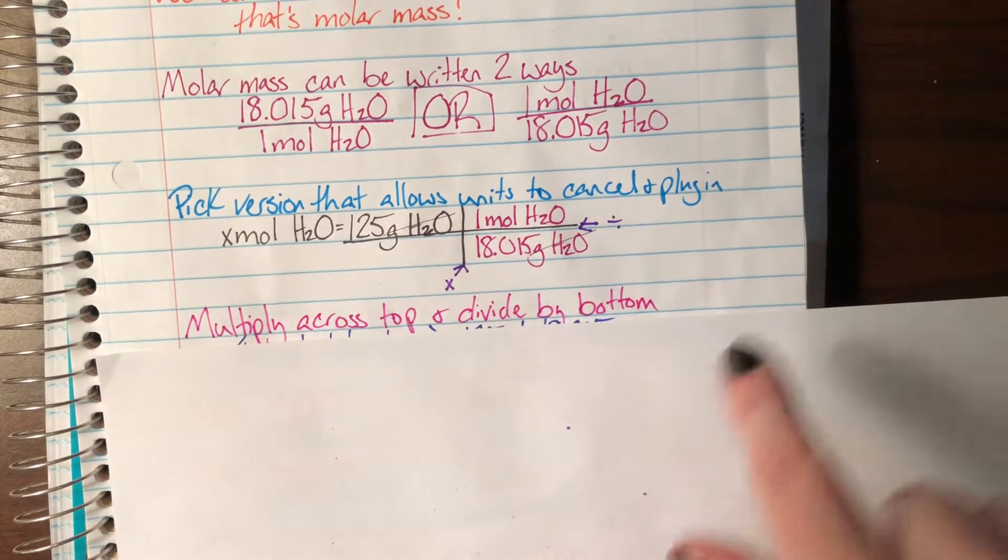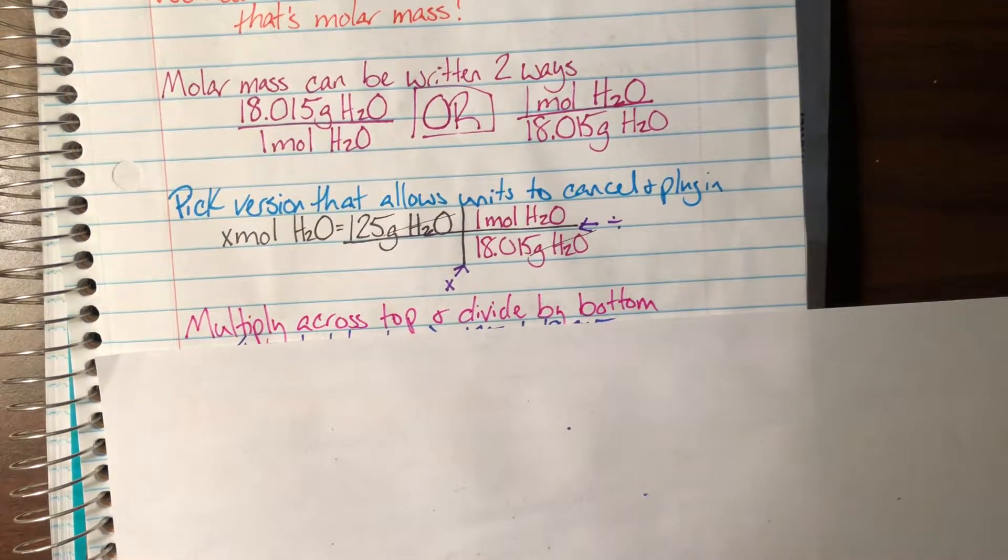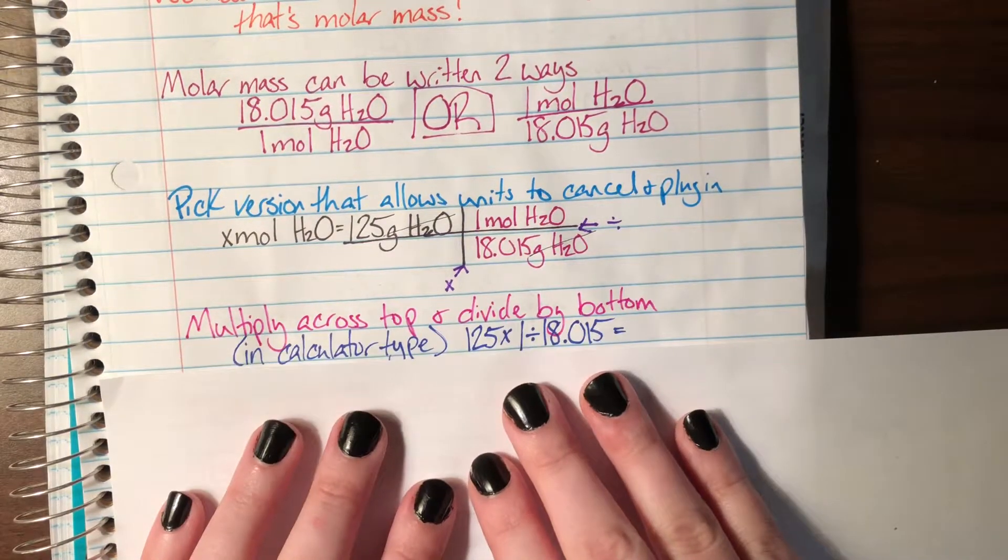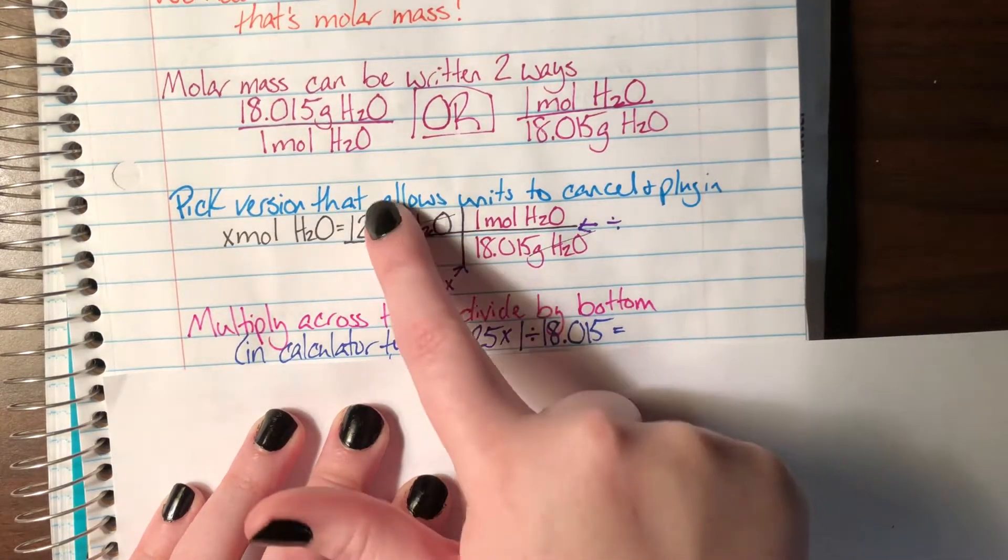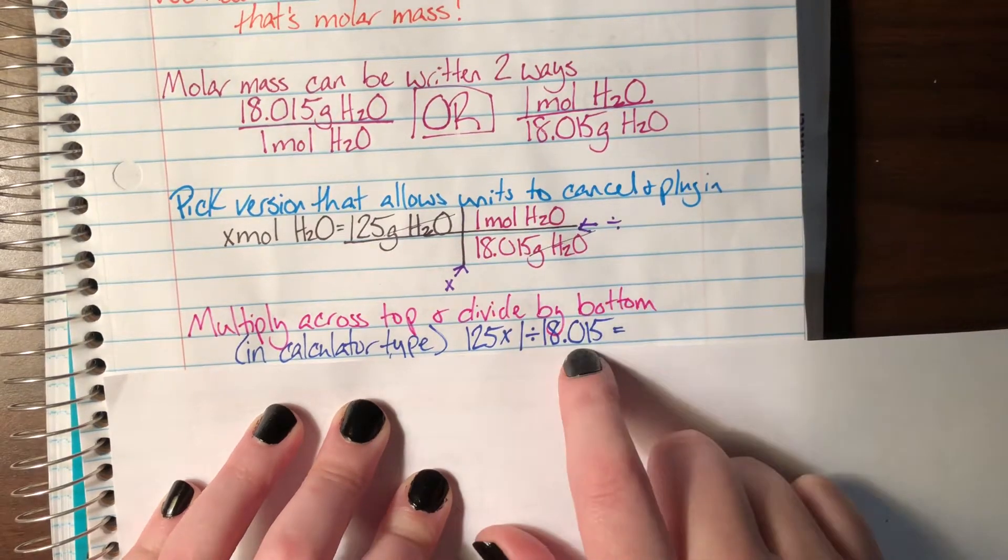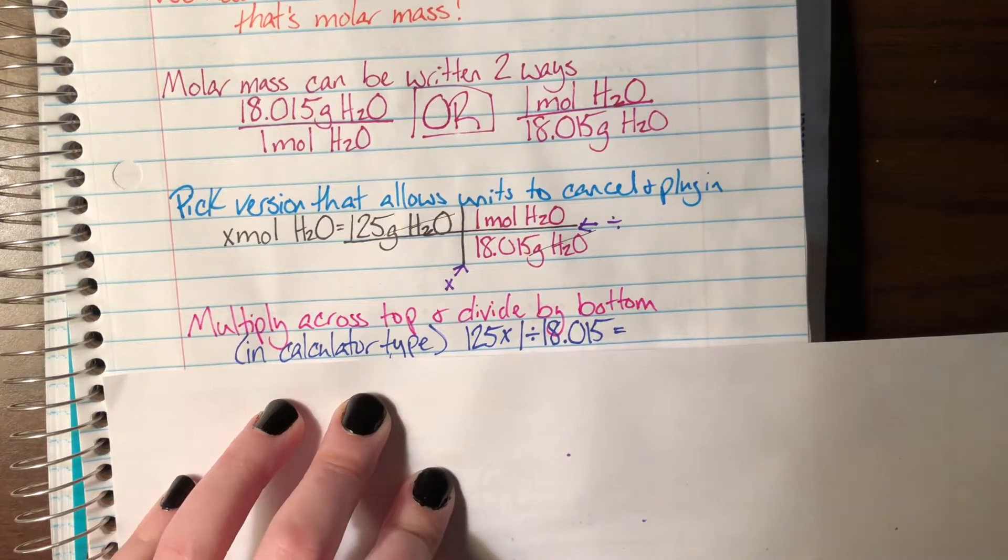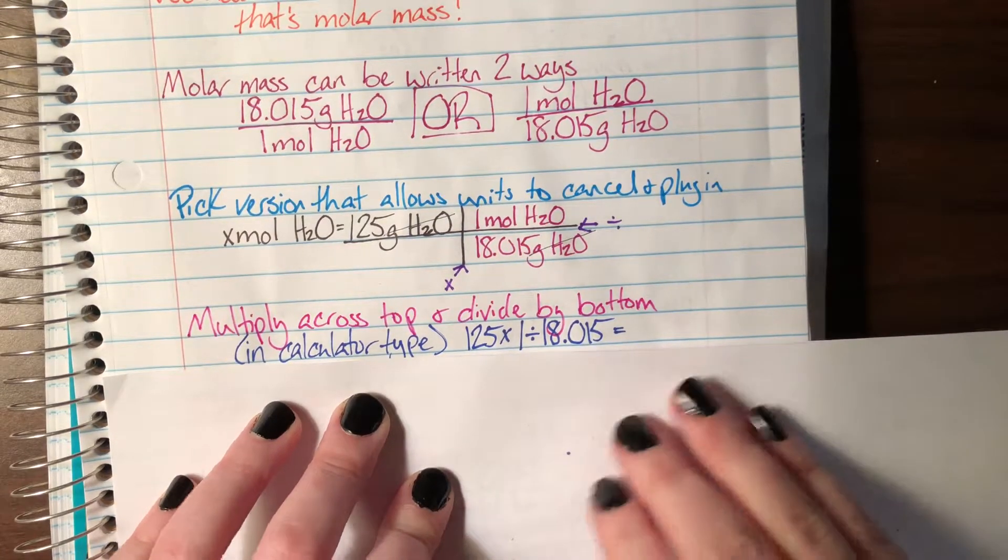So how we actually use the train tracks to tell us what to do with all of our operations is we are going to multiply everything that's on the top and divide by everything that's on the bottom. So in the calculator, it would look like this: 125 because it's on the top, multiplied by 1 because it's on the top, divided by 18.015 because it's on the bottom.